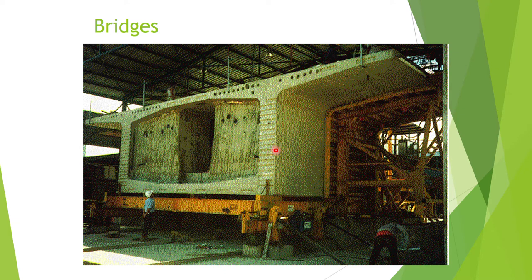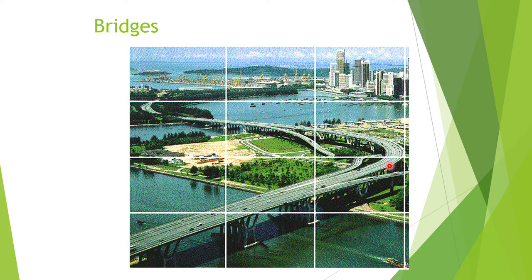Segmental construction normally involves hollow box sections, and each section will have a diaphragm in order to hold the Pre-stressing steel. This is the finished bridge of that segmental box girder — it is actually the second link of the Malaysia to Singapore Highway. During the construction, I was there to witness how the construction is done.